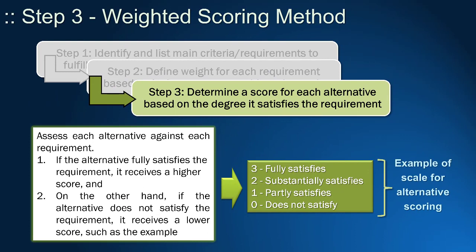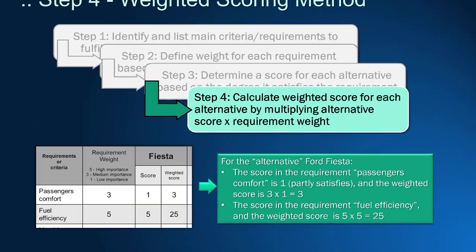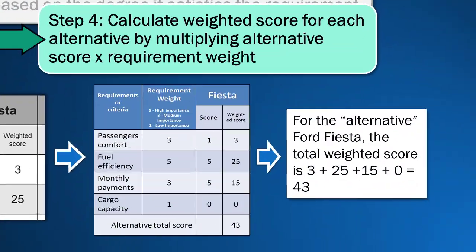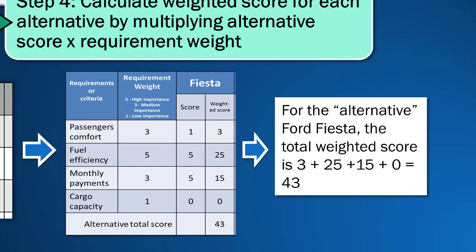During step three, focus on one alternative at a time and evaluate it on each requirement. For instance, you may ask: does the alternative satisfy the requirement? In our example: does Fiesta satisfy comfort requirements? The answer naturally leads to a score. In step four, calculate the weighted score for each alternative by multiplying the score and its respective weight, then add up the weighted scores to get the total weighted score for each alternative. This is simple math, as seen in the example.